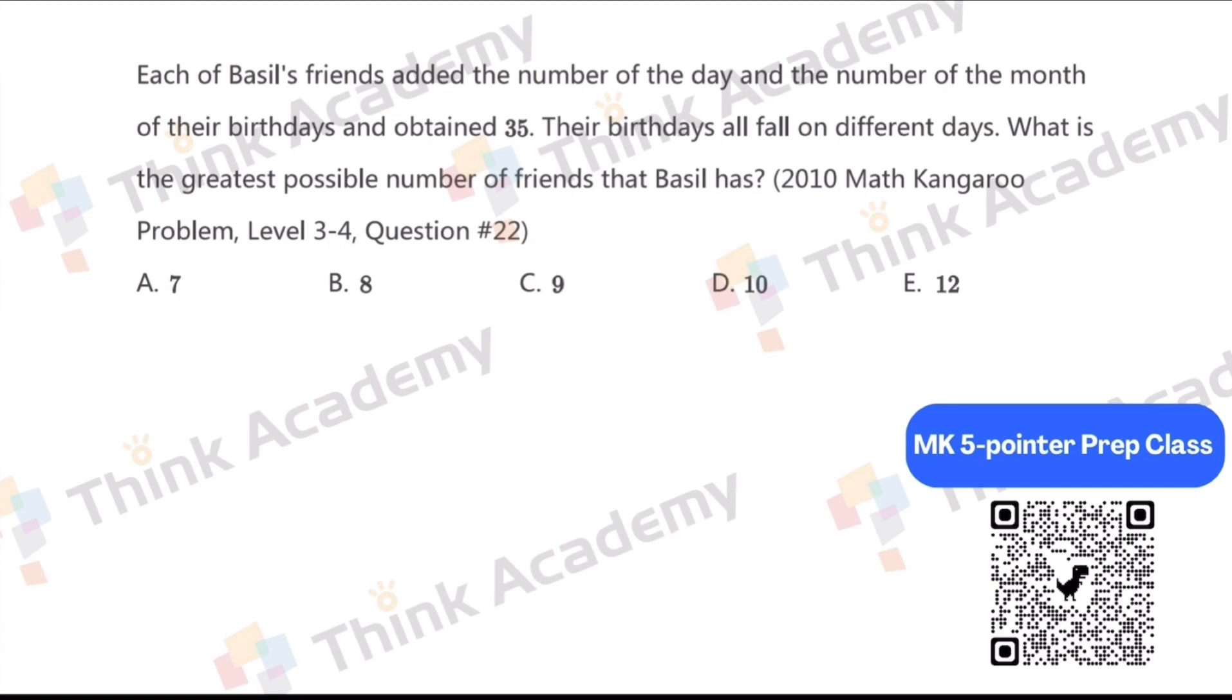The last question. Each of Basil's friends added the number of the day and the number of the month of their birthdays and obtained 35. Their birthdays all fall on different days. What is the greatest possible number of friends that Basil has?